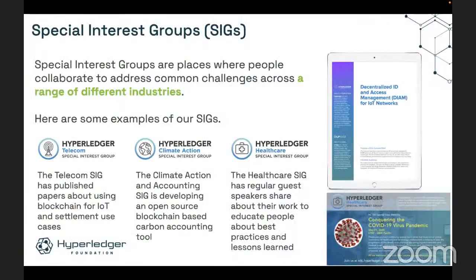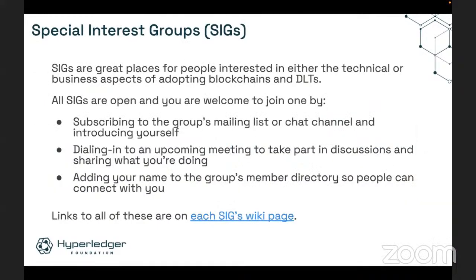Beyond the different projects, we also have special interest groups. Our special interest groups are places where people come together to collaborate on how these technologies are being adopted in different industries. You can see here there are a number of different special interest groups, including telecom, climate action, healthcare, and supply chain, among others. If you're interested in specific use cases or how blockchain and distributed ledger technologies are being deployed and adopted in a given industry, check out our special interest groups. All these SIGs have public mailing lists or chat channels you can join, with regular calls available. All this information is on the Hyperledger Wiki at wiki.hyperledger.org.